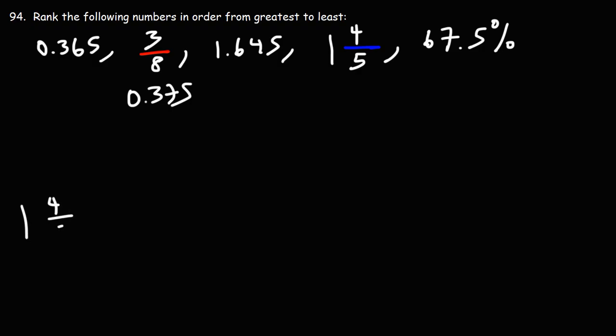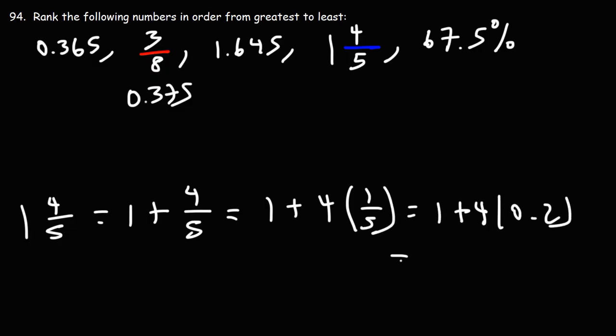Now, 1 and 4 fifths, this is 1 plus 4 over 5. And 4 over 5 is 4 times 1 over 5. 1 over 5 is 0.2. 4 times 0.2 is 0.8. So this is 1 plus 0.8. So that's 1.8.